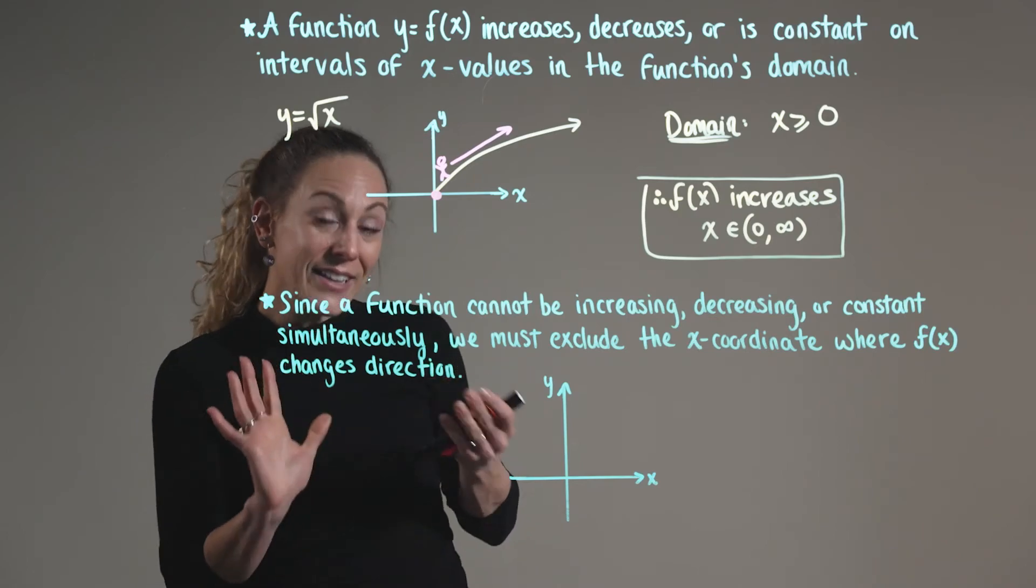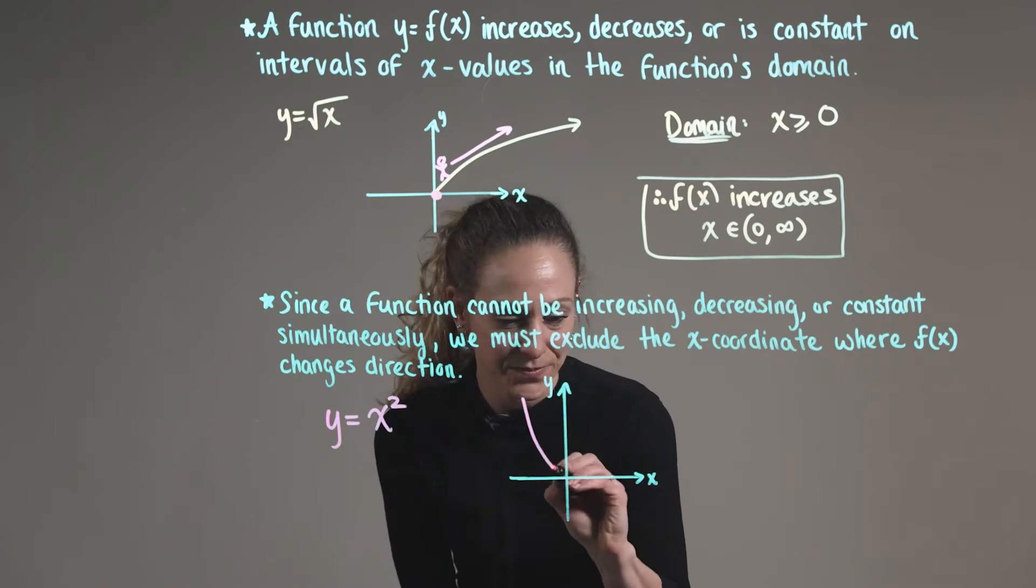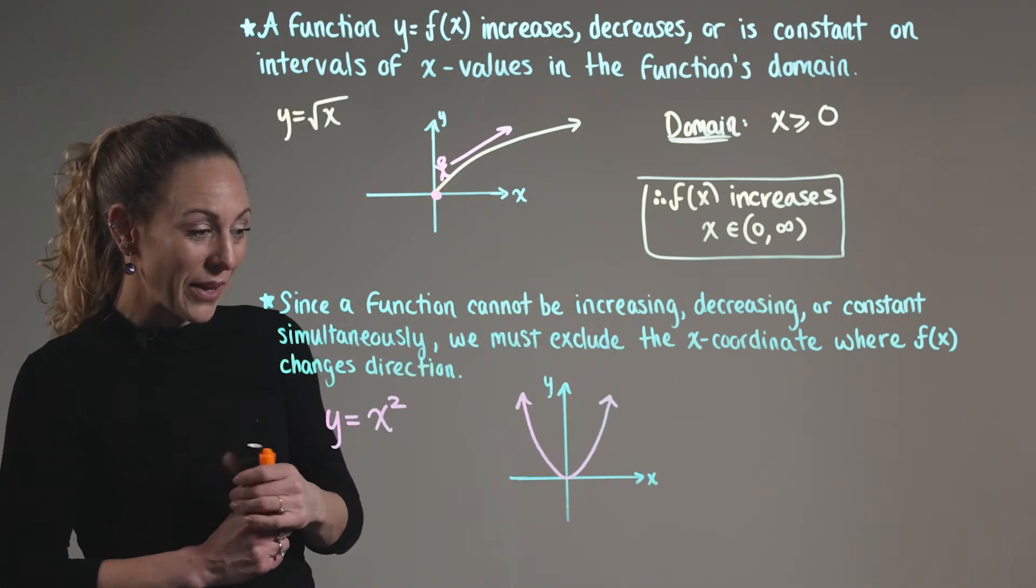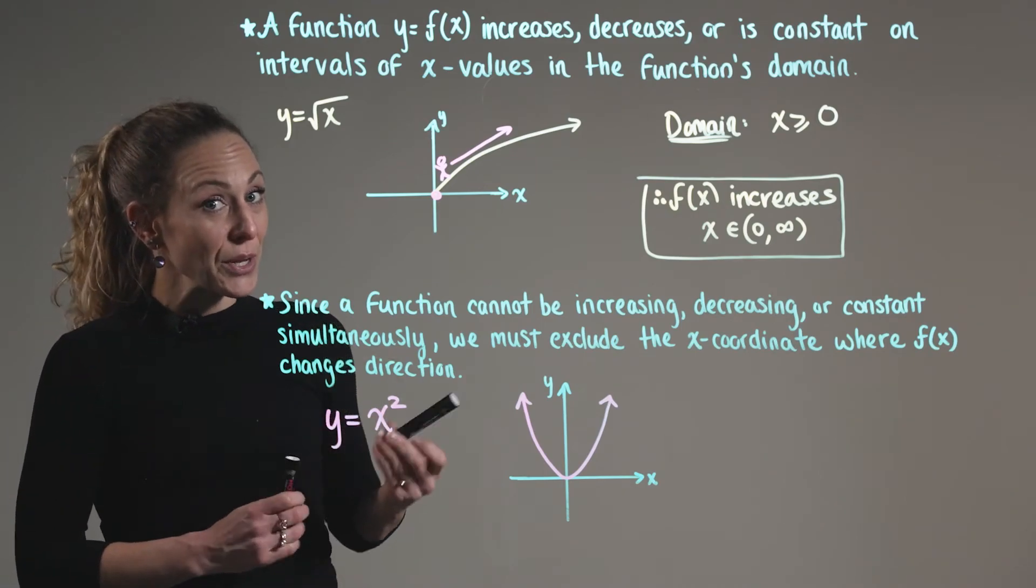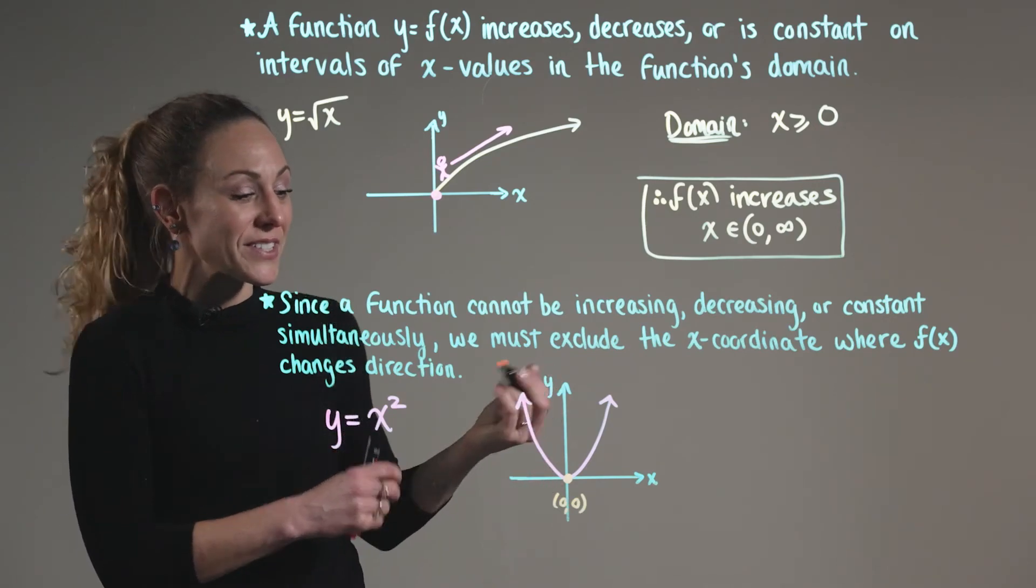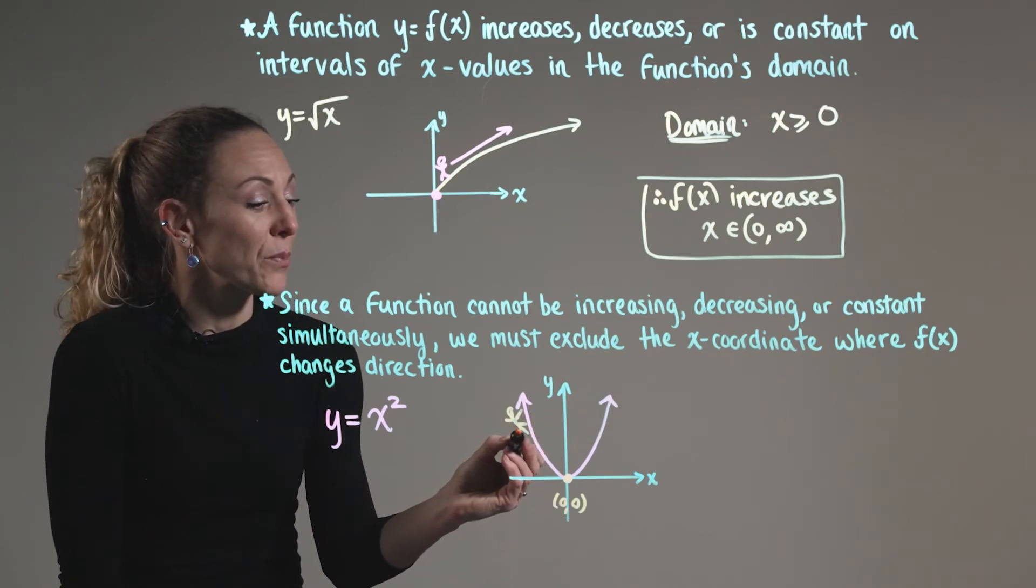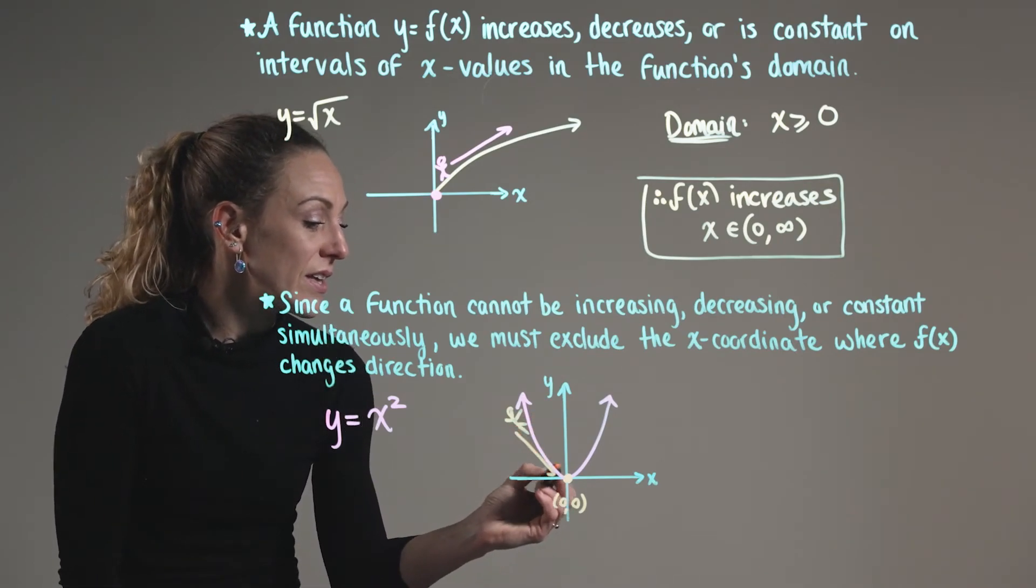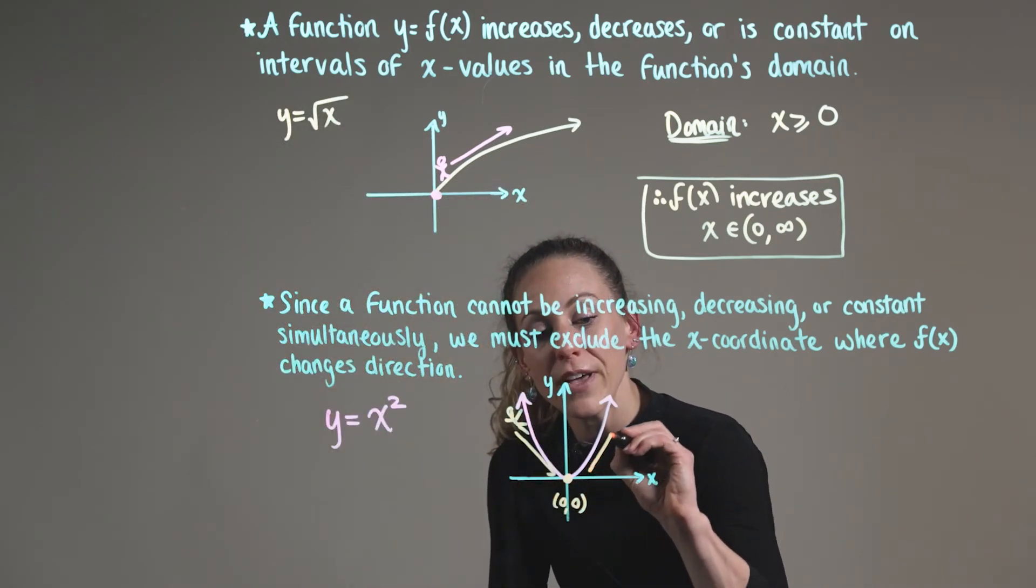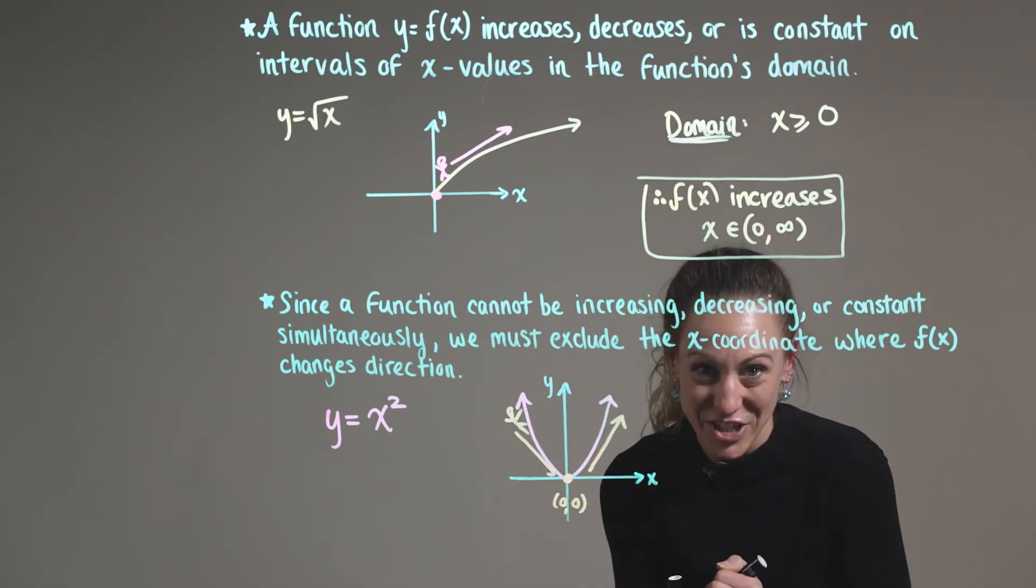So to highlight this point, let's consider the graph of the parabola. So looking at the graph of the parabola, we can see that we have a turning point here at the origin. And again, imagining yourself standing on the graph, we can see that on the left hand side, we are moving downward, changing direction here at the turning point, and then we'll be moving upward. So this turning point represents a change of direction.